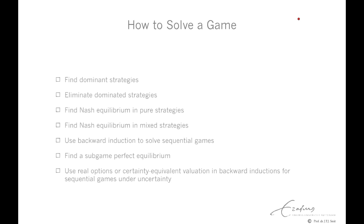Let's first consider the solution concept of simultaneous move games. First, find dominant strategies. For simultaneous move games, we should first consider whether a player has a strategy or course of action that outperforms all other strategies, independent of the actions of rivals. This is a dominant strategy. When we find dominant strategies, we can find the Nash equilibrium.